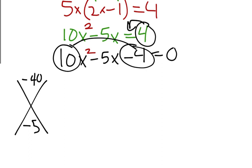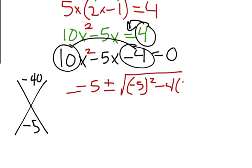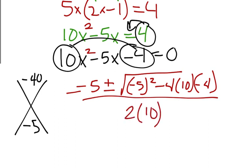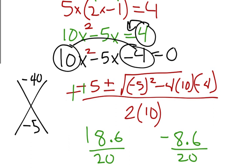What that looks like is we've got to do quadratic formula. So we take negative b, negative 5, plus or minus the square root of b squared, which would be negative 5 squared, minus 4 times 10 times negative 4, all over 2 times the 10. I would just go ahead and plug this into my calculator at this step because I don't really need the simplified number. I just want the decimal. So if you punch it into your calculator, you should get 18.6 over 20 and then negative 8.6 over 20.